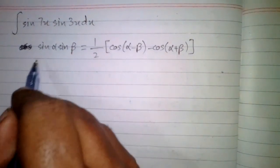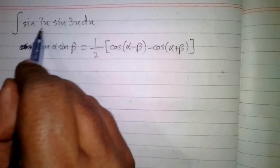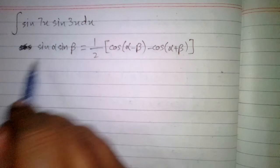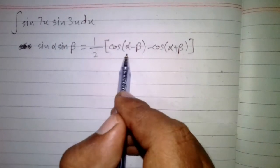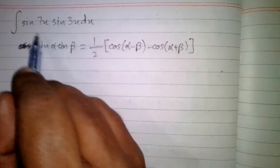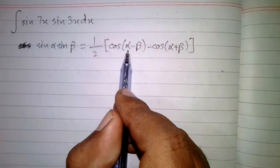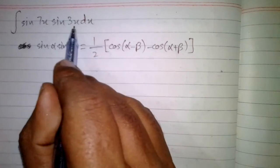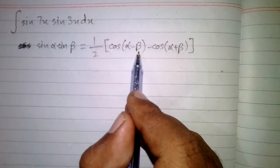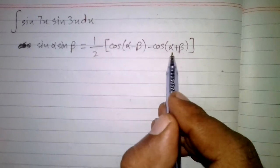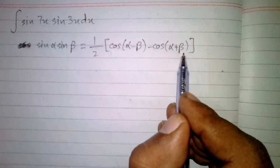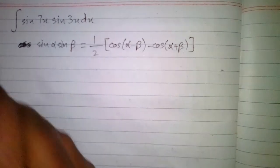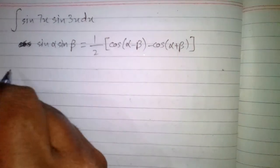Here we can see that we have 7x in place of α and 3x in place of β. So we can put 7x in place of α and 3x in place of β, and apply the formula.